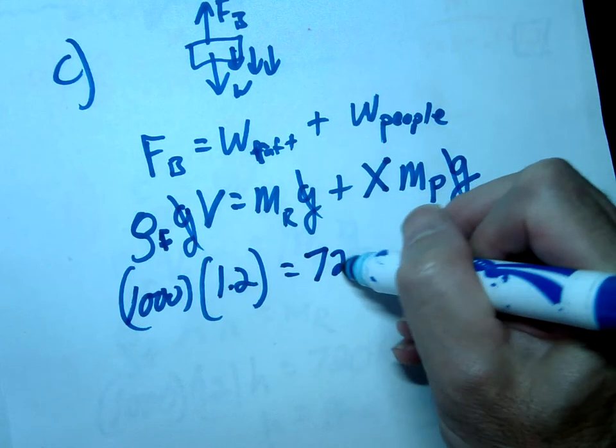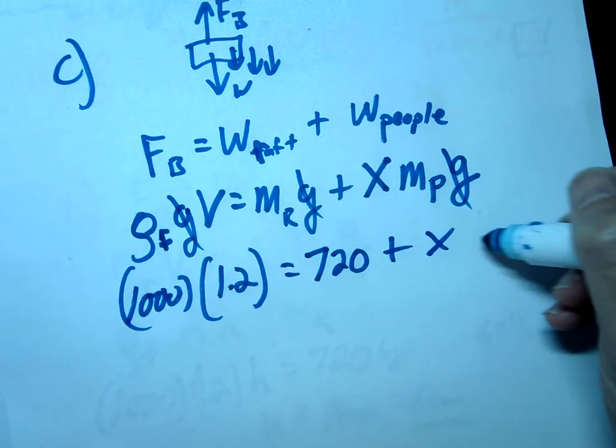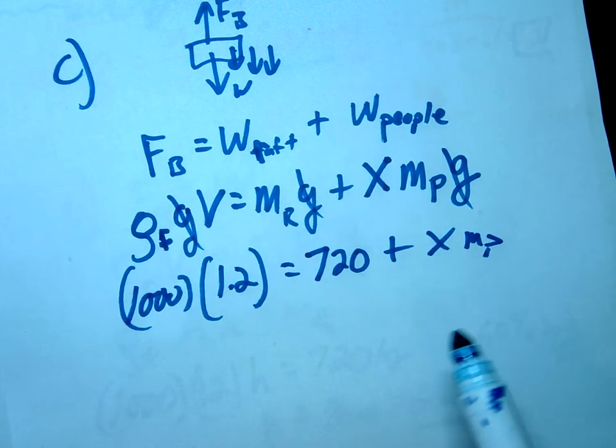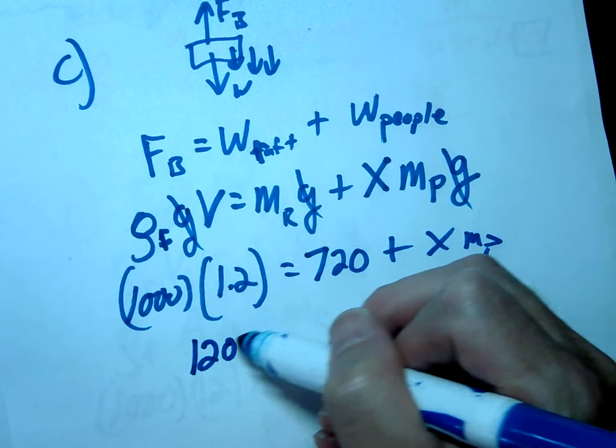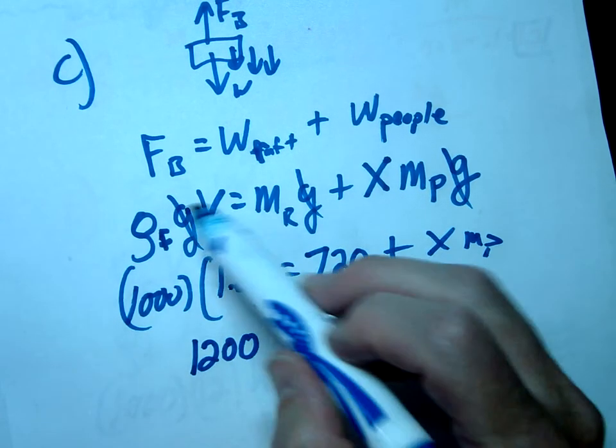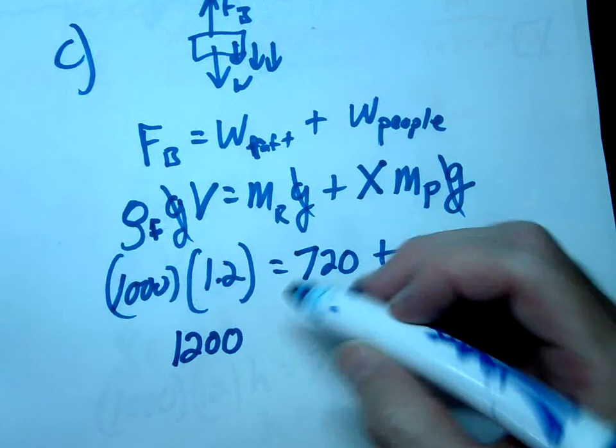That should equal the mass of the raft which was 720 plus x times mass of the people. Notice here that the buoyancy force is going to be 1200, or actually it's not a force at this time because we cancel g.